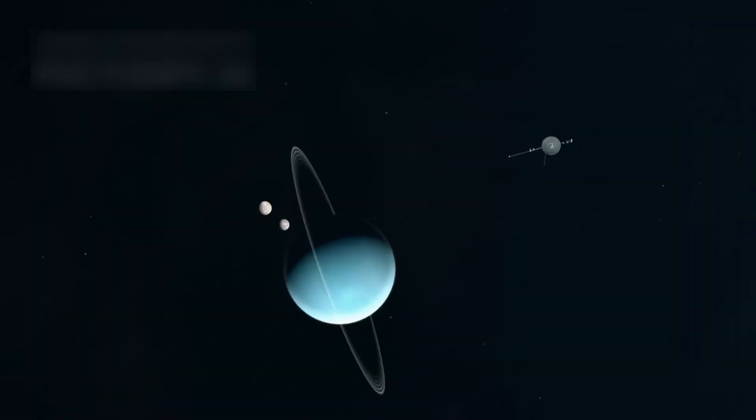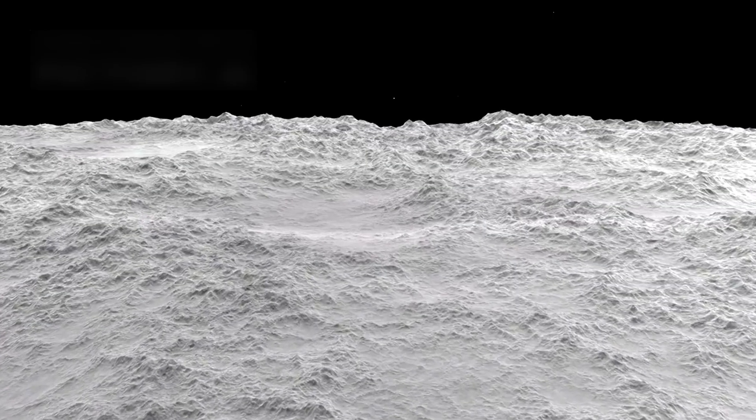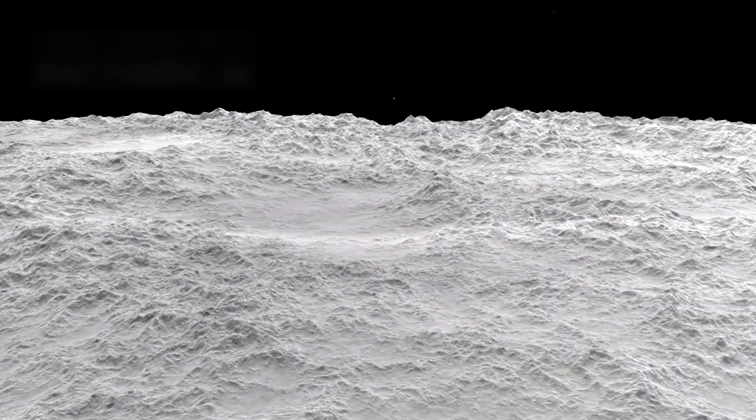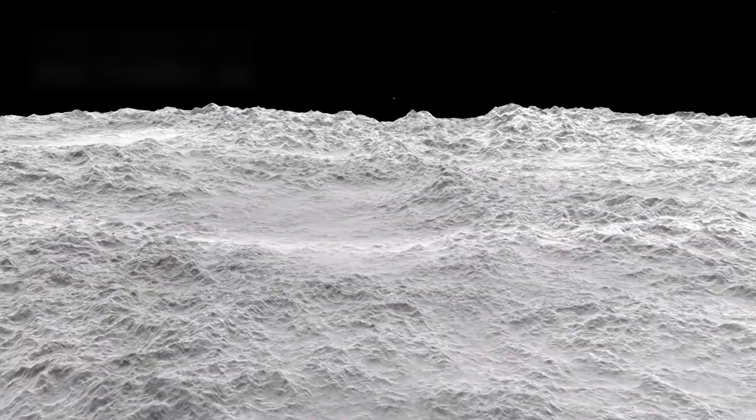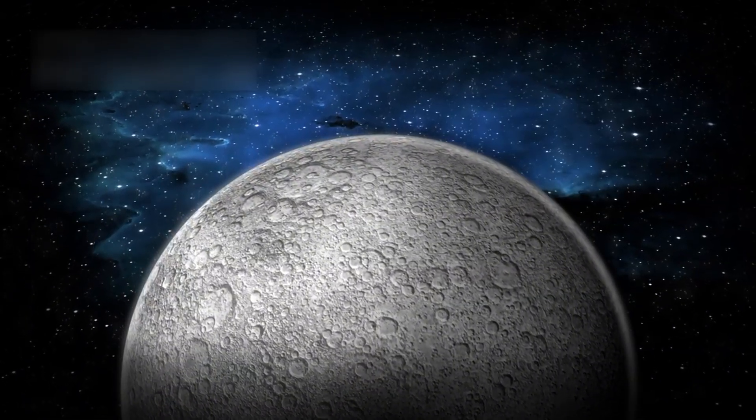Voyager 2 also found 10 new moons around Uranus. It showed that Miranda, one of them, has unusual surface features. That moon alone sparked more debate among astronomers.